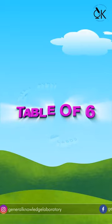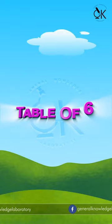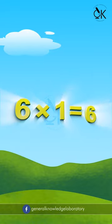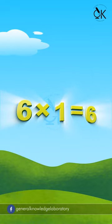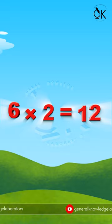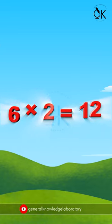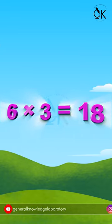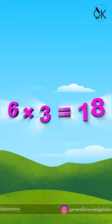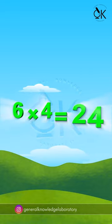Table of six. Six ones are six. Six twos are twelve. Six threes are eighteen. Six fours are twenty-four.